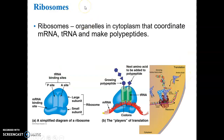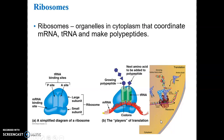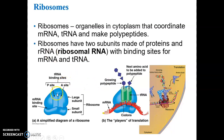Now let's move to the ribosomes. These are organelles in the cytoplasm that coordinate the junction of the mRNA molecule here in red and the tRNA molecules here in green, so that the polypeptide can be synthesized. The ribosome is the site of protein or polypeptide synthesis, and this is occurring in the cytoplasm. The ribosomes are comprised of two subunits - a small and a large subunit - and they have binding sites for the mRNA molecule and binding sites for tRNA molecules called the P-site and the A-site.